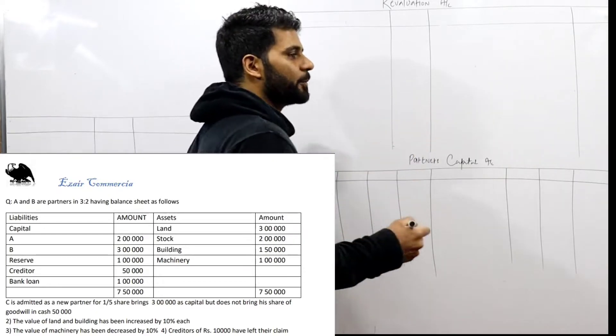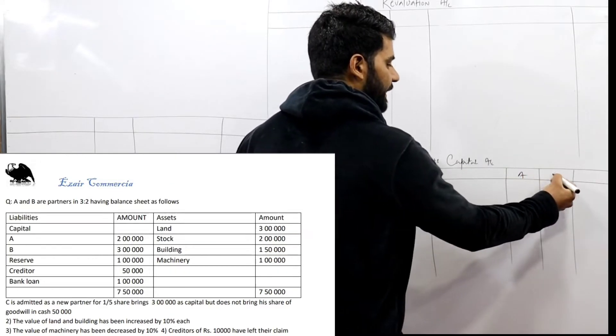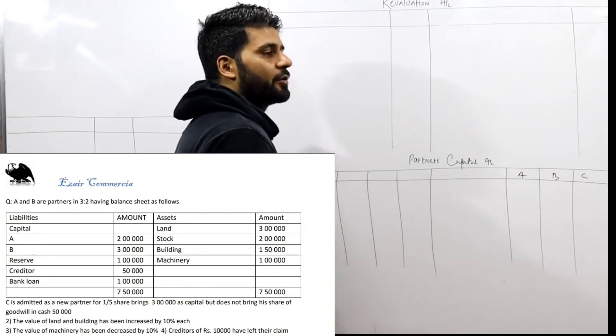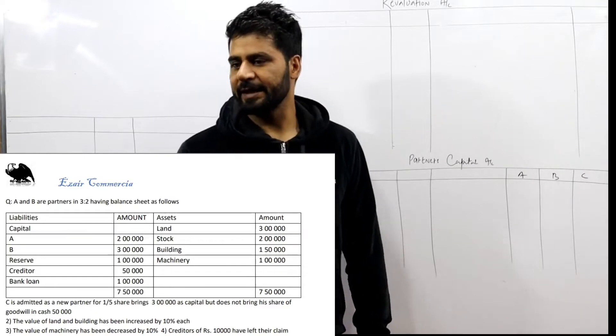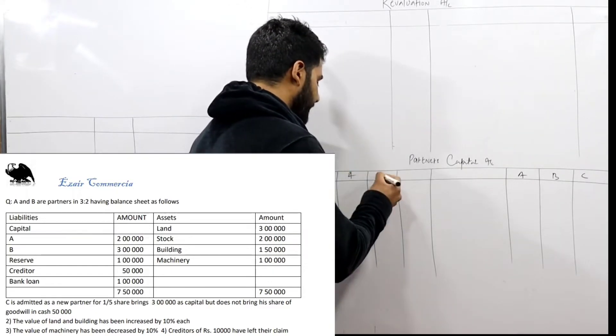C is admitted as a new partner. C is our new partner for 1 by 5 share, brings 3 lakh as capital. How much capital does he bring? 3 lakh.